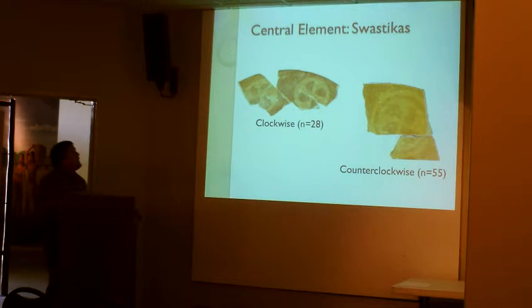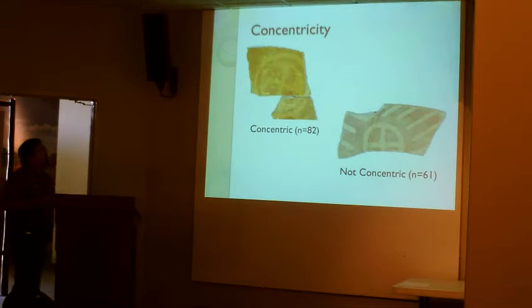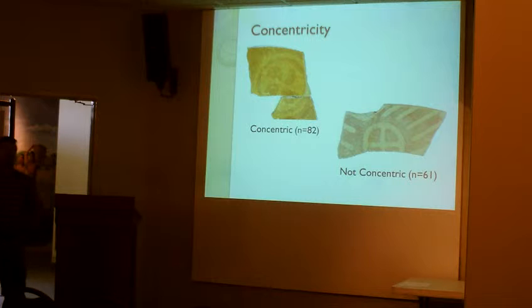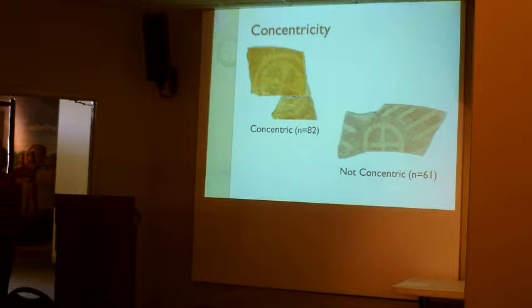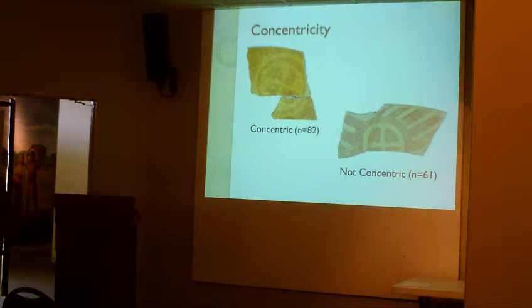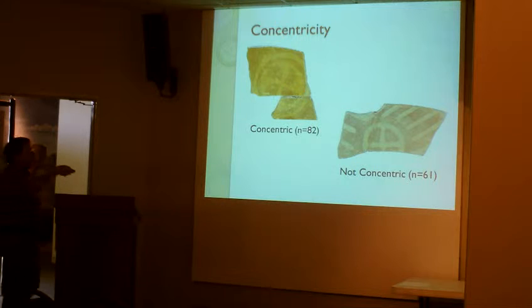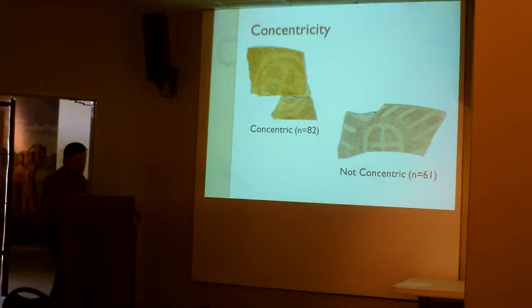The last element is concentricity. Some crossing circles are non-concentric, while some have a second concentric circle around the outside — a fairly even split between the two.